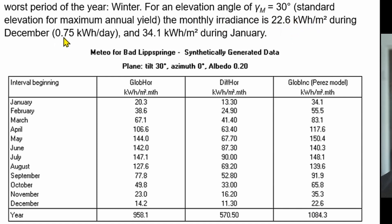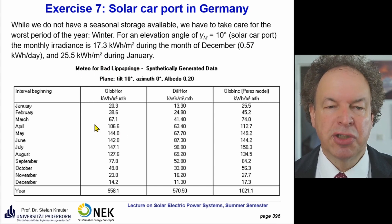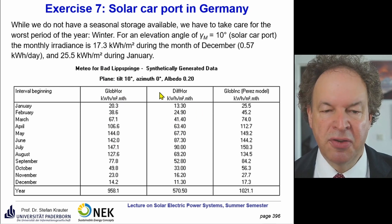Going to 10 degrees of elevation, we see some losses in overall yield all over the year, but the worst-case month is much worse. In January the monthly irradiance is only 17.3 kWh/m²/month, or 0.57 kWh/m²/day. The data is from Bad Liebspringe, which is very close to Paderborn — no database for Paderborn was available, but the values are pretty accurate.